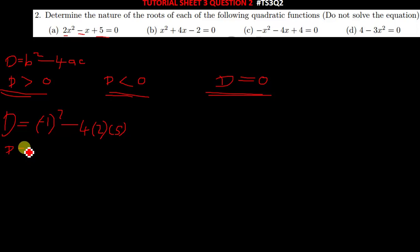So our D for the first question there gives us 1 minus 4 times 2 gives us 8, 8 times 5 you get 40. So meaning D would be negative 39. As we can see, our D is less than 0. So our conclusion will be that it has no real roots, or it has imaginary or complex roots.